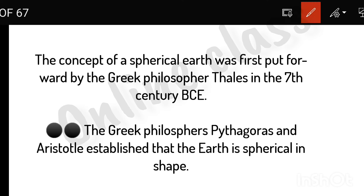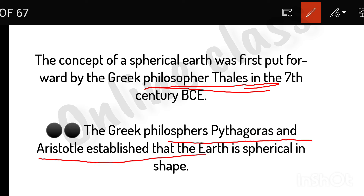The spherical earth was first put forward by Greek philosopher Thales in the 8th century BCE. The Greek philosophers Pythagoras and Aristotle established that the earth is spherical in shape.